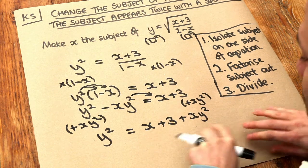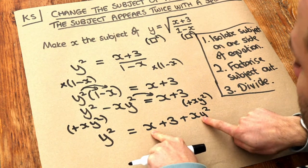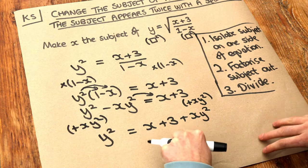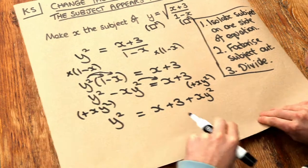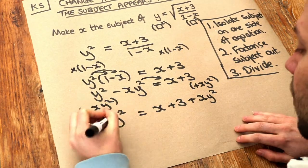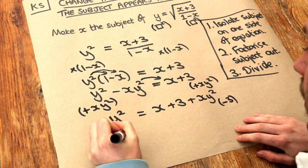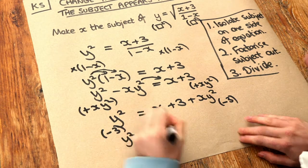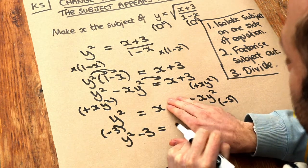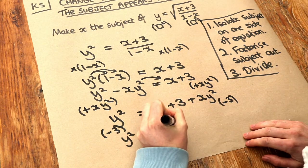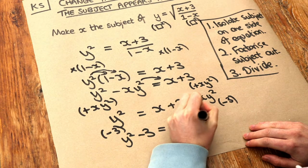Now on the right hand side, we've got all the x terms on one side. But we've got this plus 3, which is not an x term. So we should move that to the other side. To get rid of the plus 3, we should minus 3 from both sides. y squared minus 3. And then subtracting 3 gets rid of the plus 3, leaving just x plus xy squared.